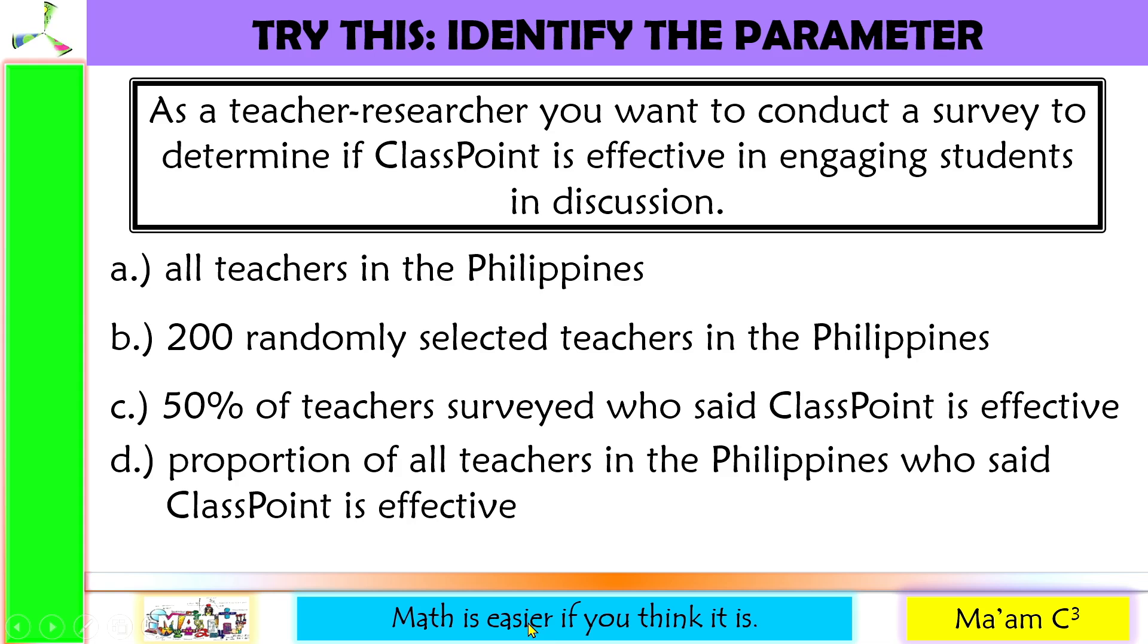Next one, as a teacher researcher, you want to conduct a survey to determine if class point is effective in engaging students in discussion. Which among these represent a parameter? Letter A, all teachers in the Philippines. This is actually the population. Letter B, 200 randomly selected teachers in the Philippines. This is the sample size. Letter C, 50 percent of teachers surveyed who said class point is effective.